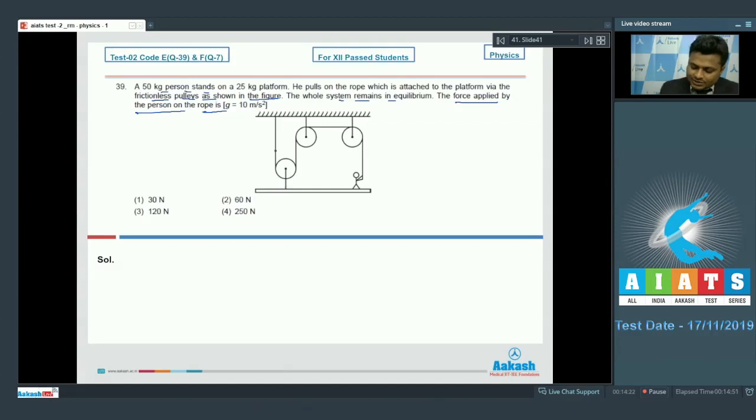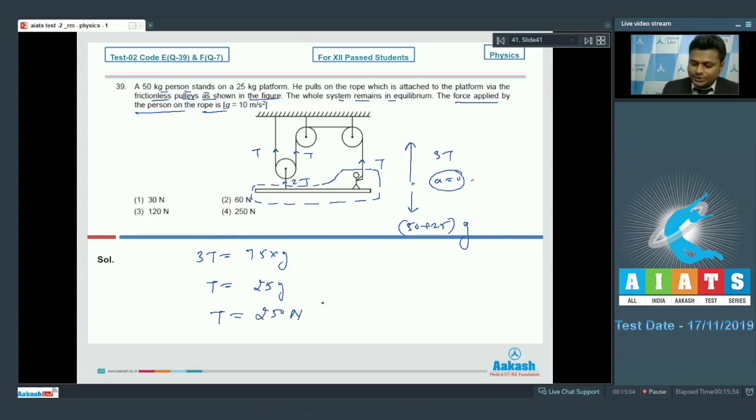Now since the whole system is in equilibrium, consider suppose tension in this string is t. So here t, here t, tension in this one will be 2t, tension here also t. Consider man and platform as a system. We can say that the total upward force on the system is 3t, and total downward force is their combined weight, that is 50 plus 25 into g, due to which acceleration is 0. Therefore you can write 3t is equal to 75g. t is equal to 25g. t is equal to 250 Newton.